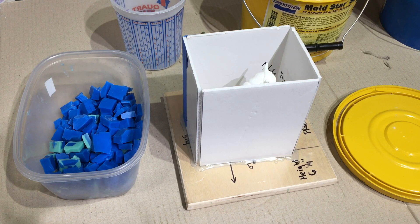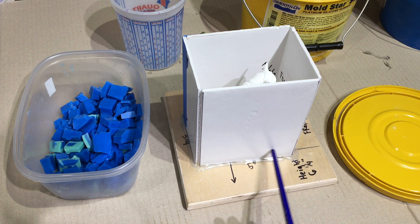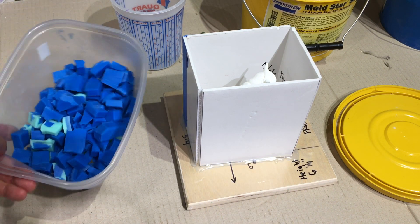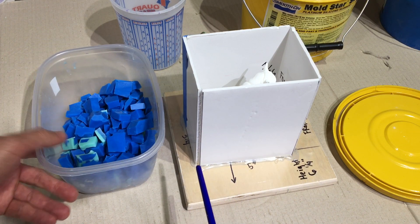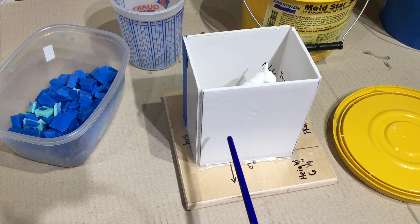So the plan is to pour this in layers. I'm going to mix up the silicone, pour a layer in here, throw in some of these little recycled bits. Another layer, more bits. And really just keep building it up layer by layer.